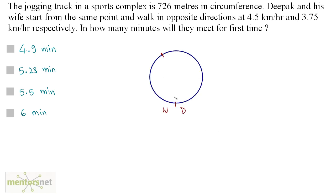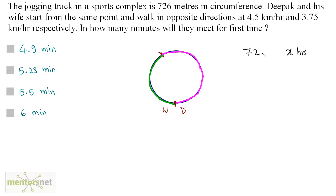Assume this is the jogging track and Deepak and his wife start from a point, meeting at another point. The distance traveled by his wife is indicated by the green line and the distance traveled by Deepak by the pink line. Both combined traveled 726 meters, since they go in opposite directions and when they meet they are 726 meters apart, which is the circumference of the track. Let the time taken for them to meet be x hours.